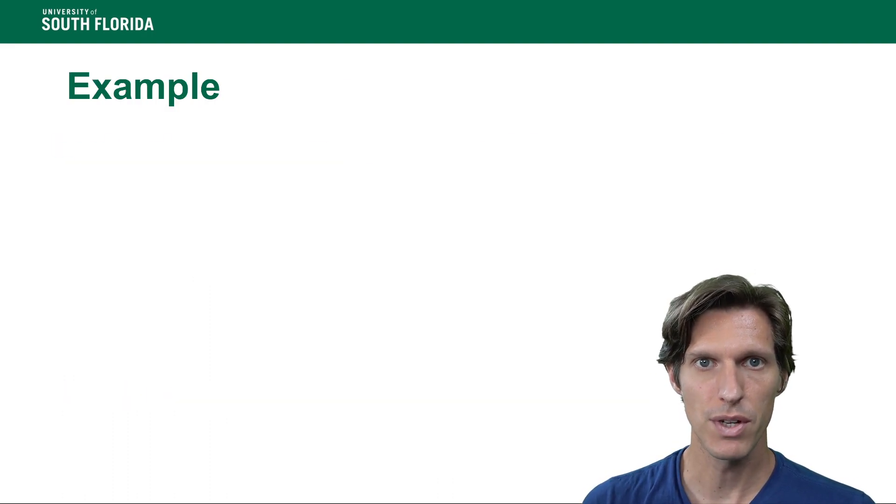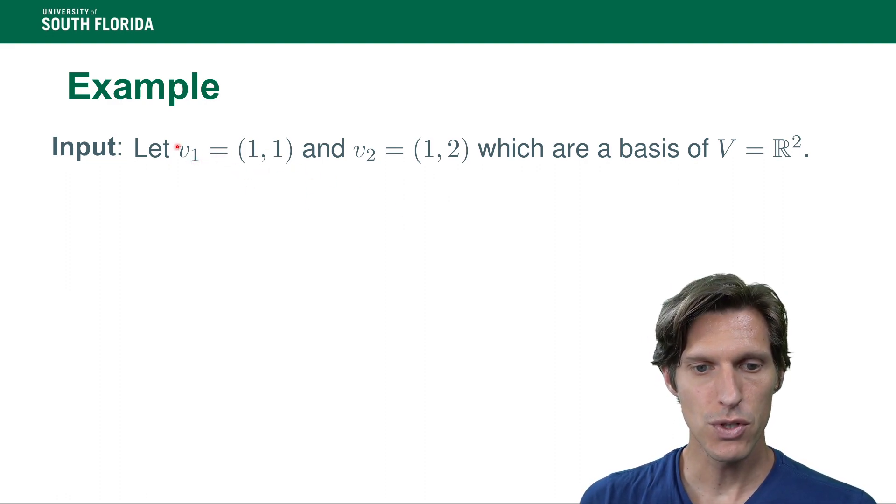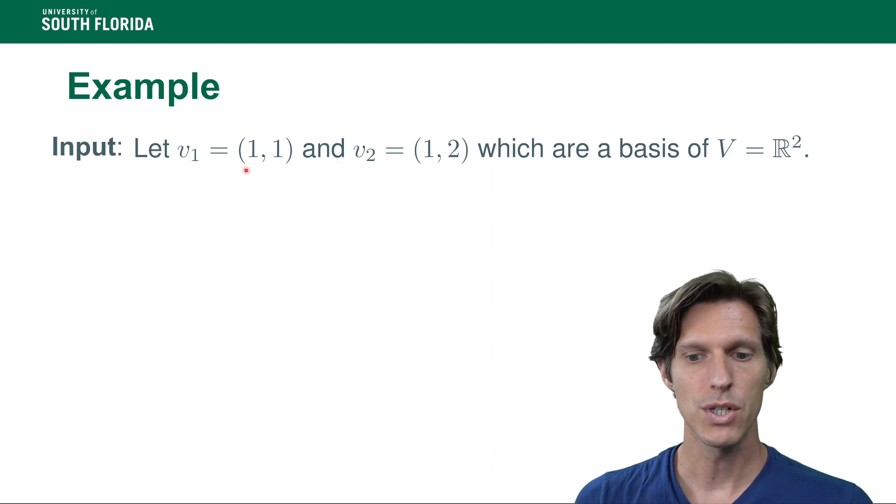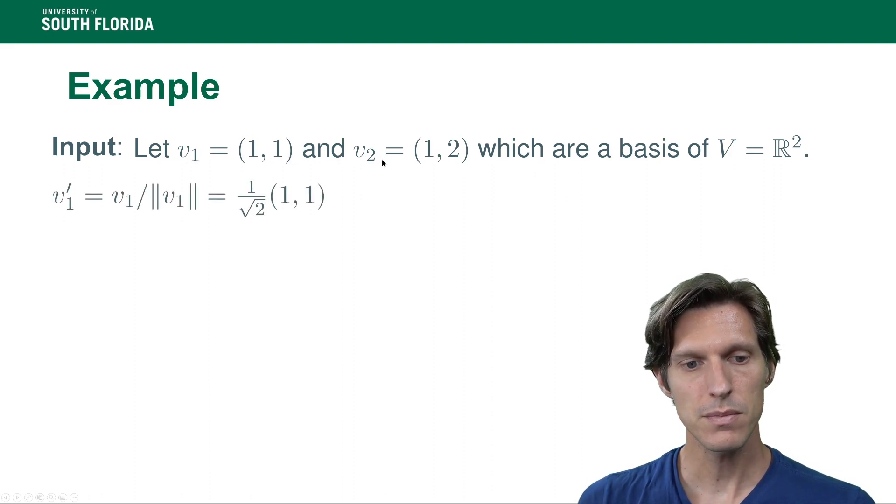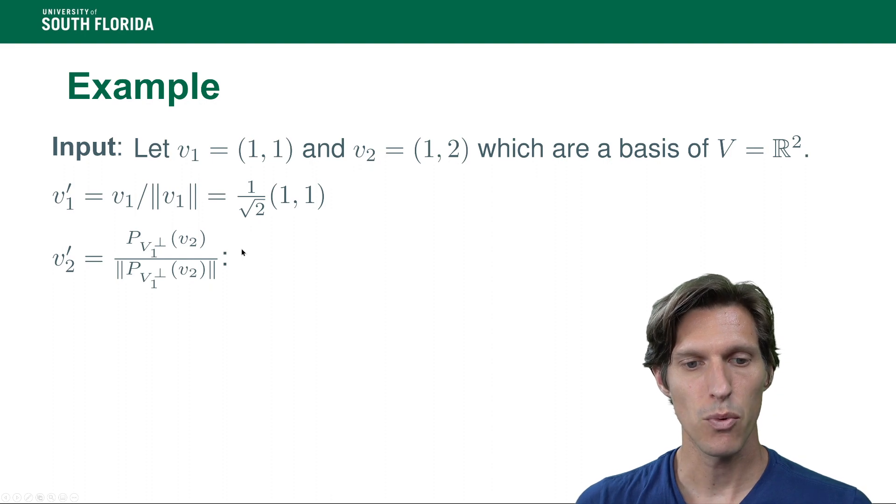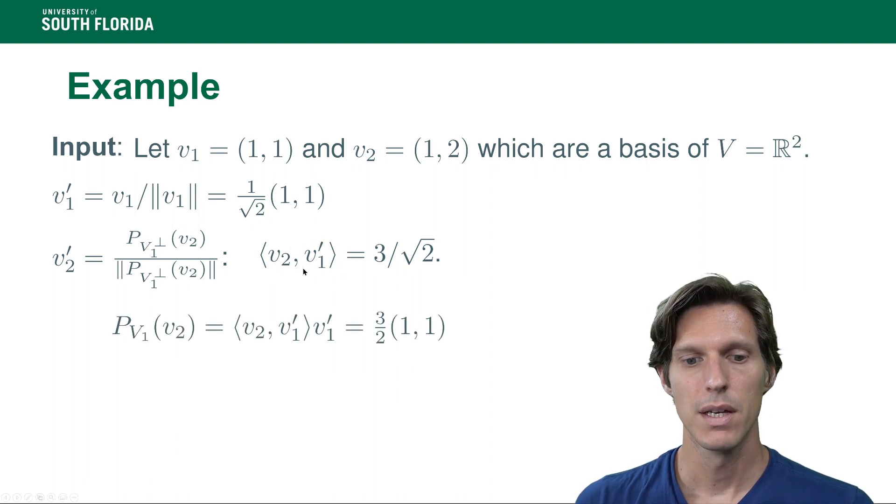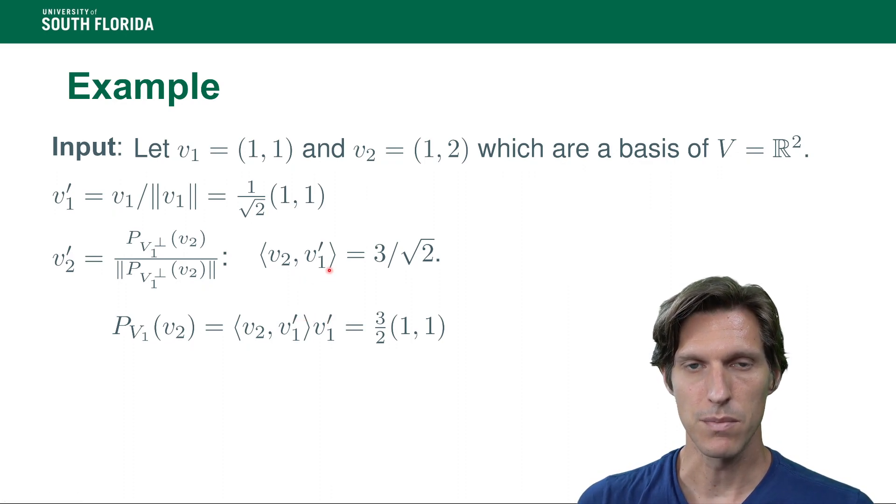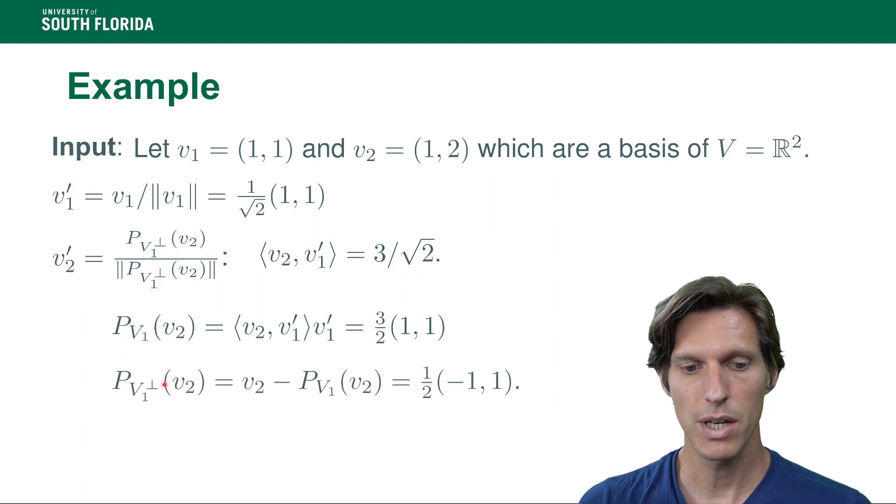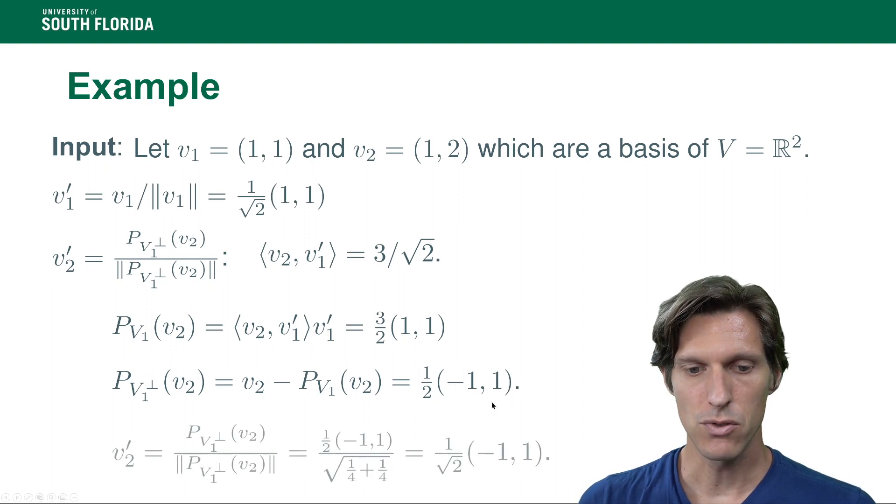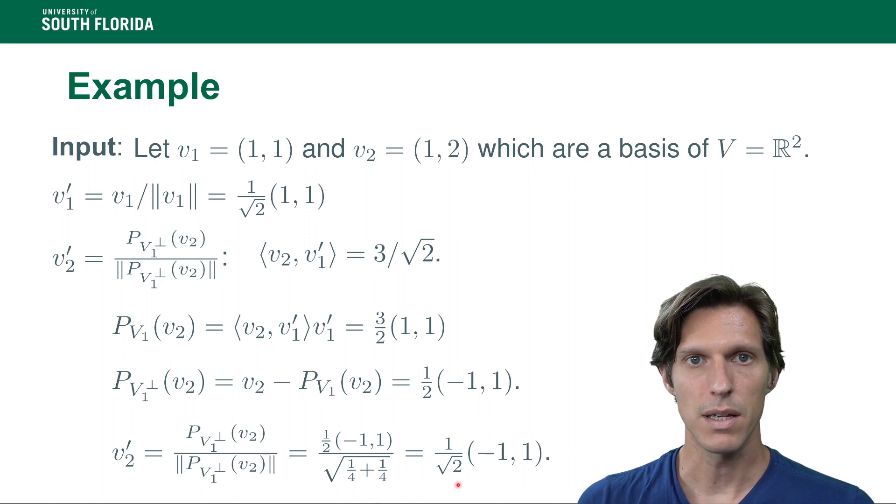Let's conclude with an example in dimension 2. We're given a basis of ℝ² where v₁ is (1,1) and v₂ is (1,2). The first step is to calculate v'₁ by scaling v₁, dividing it by its norm. Then we project v₂ onto the orthogonal complement of V₁. We calculate the projection onto V₁ by calculating the inner product of v₂ by v'₁, multiplying by v'₁. Then the projection onto the orthogonal complement is identity minus this projection. Finally, we scale by the norm, giving us the second basis vector.